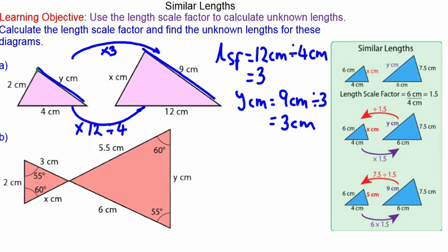We can work out the length x centimeters using the corresponding length on the smaller triangle. So x centimeters will be 2 centimeters times length scale factor 3, so x centimeters will be 6 centimeters.